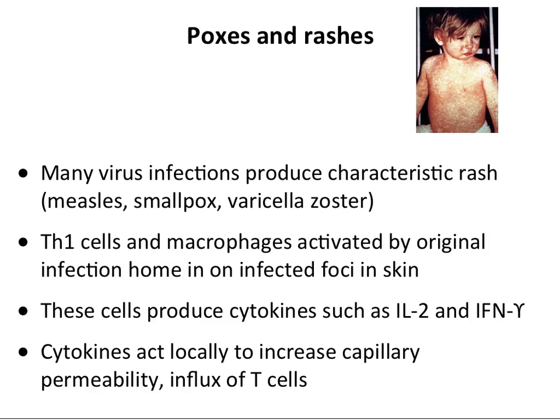Many viruses cause rashes, and most are in fact immune reactions. Measles, smallpox, varicella zoster, and many others produce rashes. The virus replicates in skin cells — either spread from outside like papillomaviruses, or by viremia like measles and smallpox — and that causes an immune response. Cells migrate to infected foci, release cytokines, cause inflammation, recruit T-cells, and CTLs lyse infected cells, giving you the rash. The rash is a combination of inflammation and cell killing by the immune response.